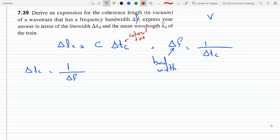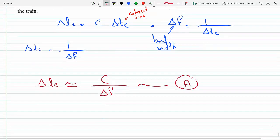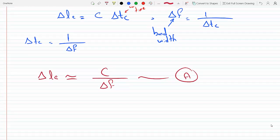And so if I put these two together I will get my Δlc to be approximately coherent length is C over bandwidth. Let's label this equation A.